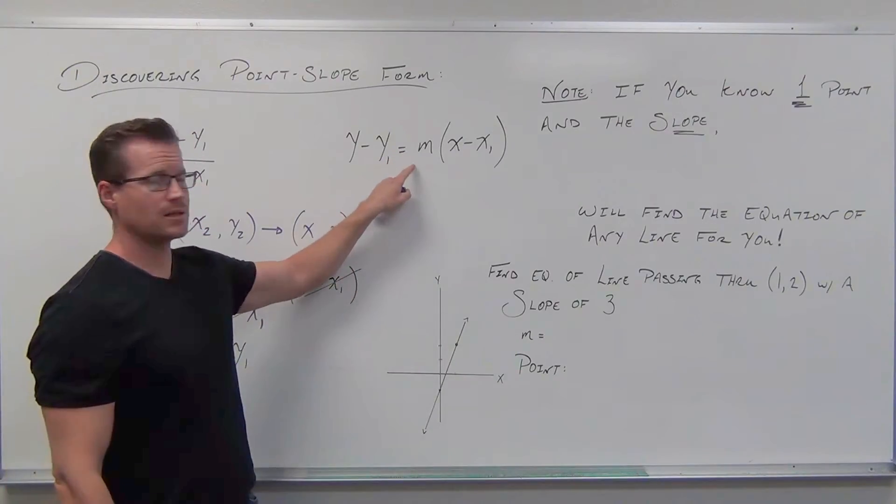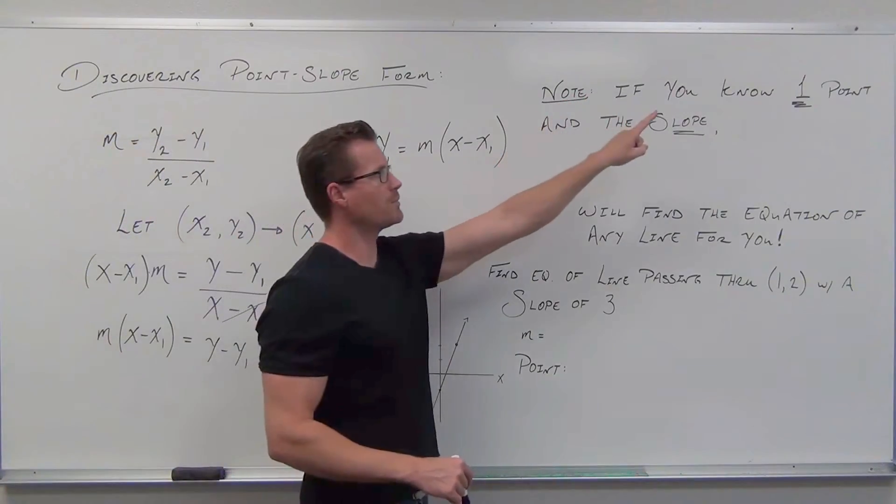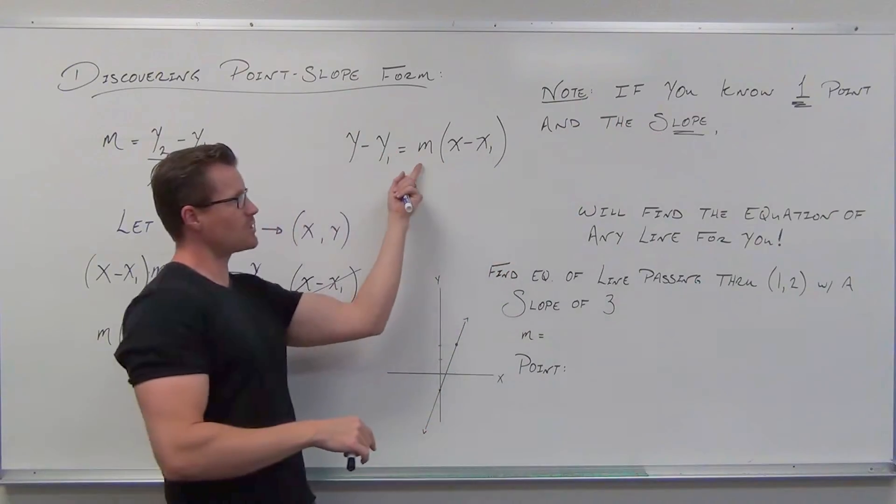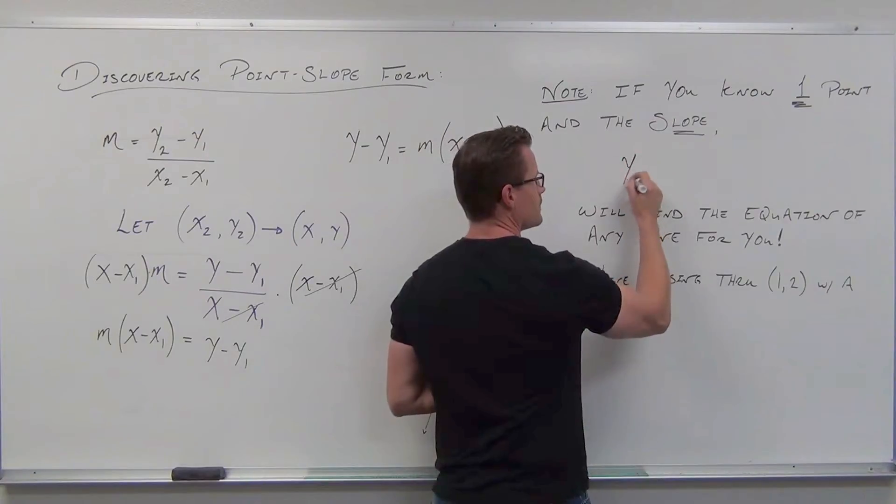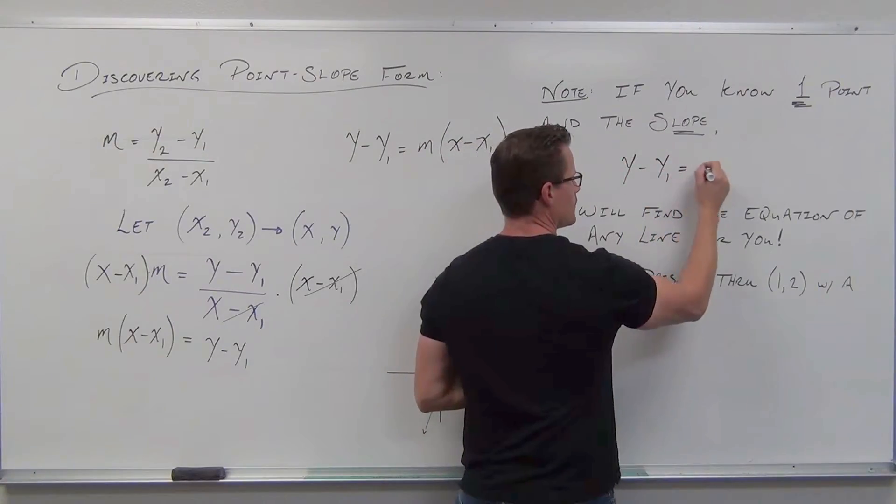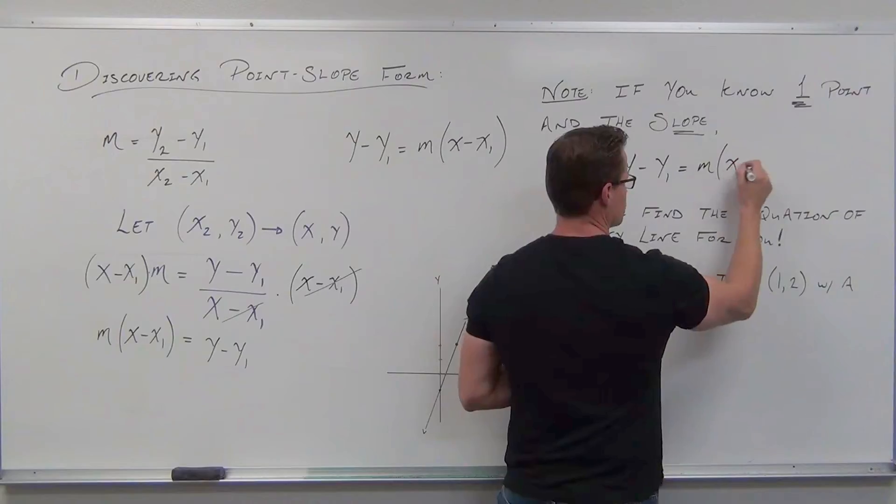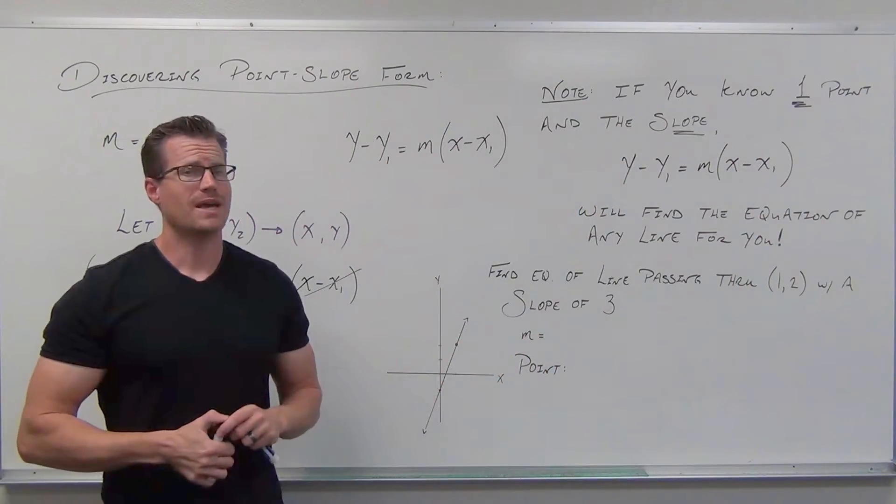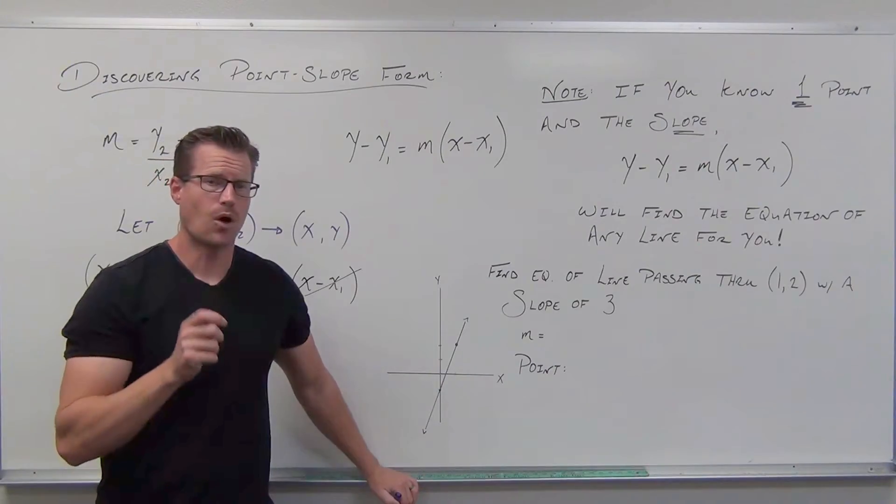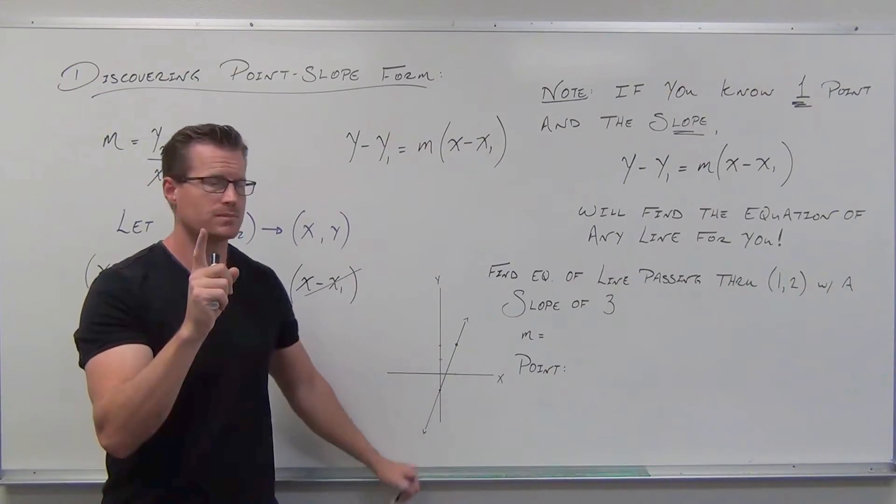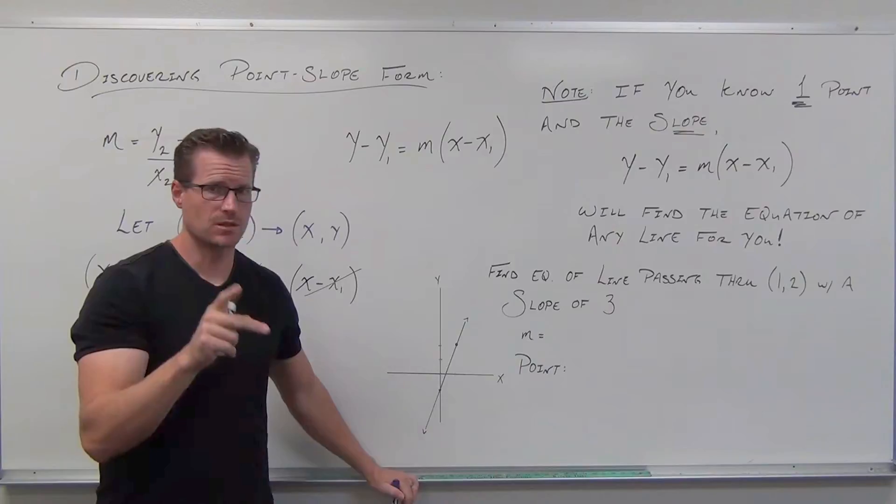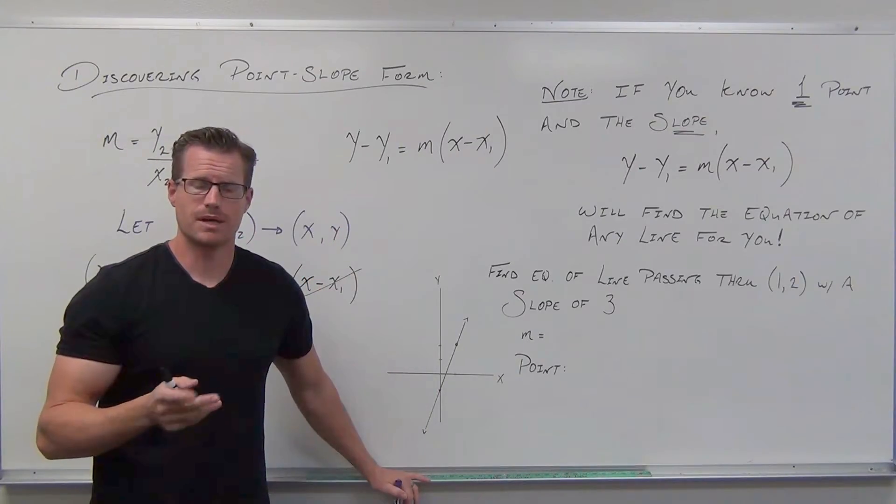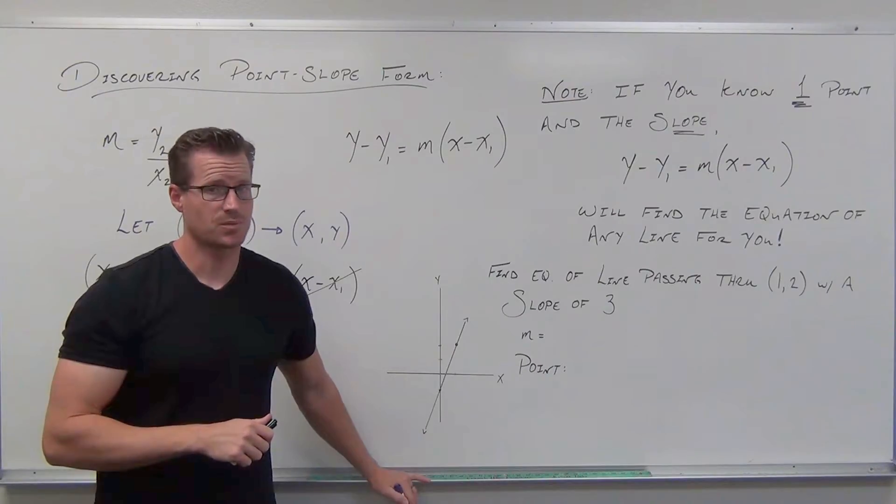If you know one point, that point goes there. And you know the slope, that slope goes there. Then this formula will find the equation of any line for you. All you need to know is one point, put it there, the slope, put it where the m goes, and solve it with some basic order operations.